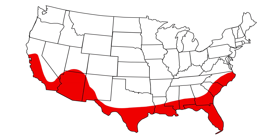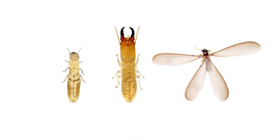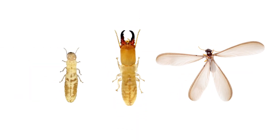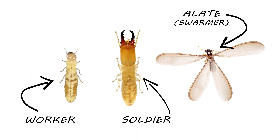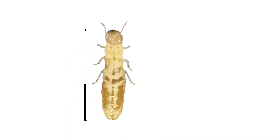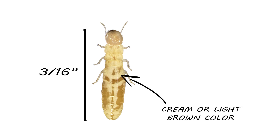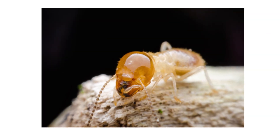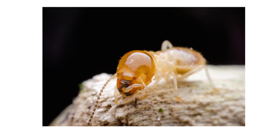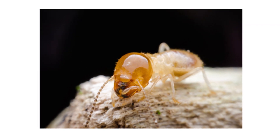Here's how you can identify and check for signs of drywood termites. Drywoods have a caste system of workers, soldiers, and reproductives — these three are the most likely that you'll see. Workers are around three-sixteenths of an inch long and typically a cream or light brown color. They're responsible for eating the wood to obtain cellulose, and the majority of the colony are workers.